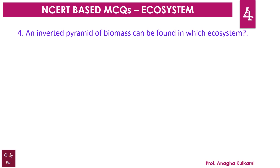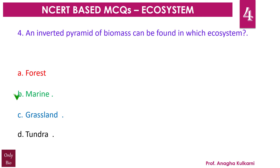Question number 4. An inverted pyramid of biomass can be found in which ecosystem? A. Forest, B. Marine, C. Grassland, D. Tundra. The correct answer is B — Marine. In terrestrial ecosystems, the pyramid of biomass is always upright. The pyramid of biomass in sea and lake is generally inverted because the biomass of fishes far exceeds that of the phytoplanktons.